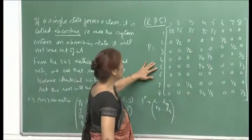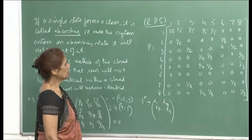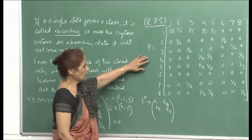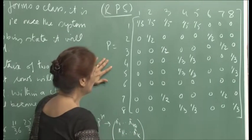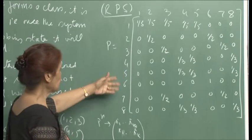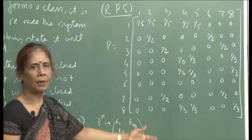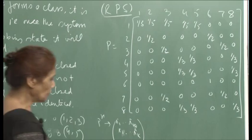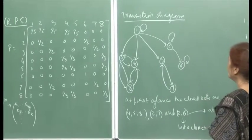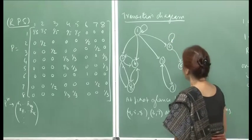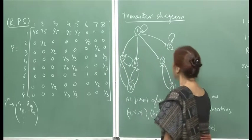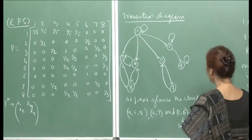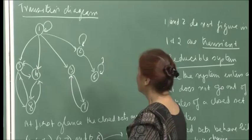A larger 8-state example from Ravindran, Phillips and Solberg is presented as an 8×8 transition matrix. Looking at the transition diagram, states 4, 5, 8 are connected; states 3, 7 are connected. States 2 and 6 appear connected, but there is no arc from 6 back to 2, and p_{6,6} equals 1 — meaning once the system enters state 6, it stays there permanently. So state 6 is an absorbing state.